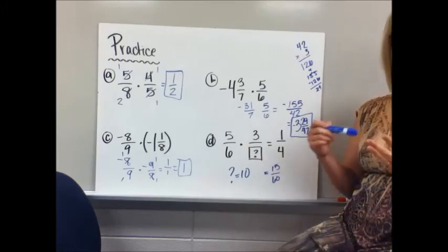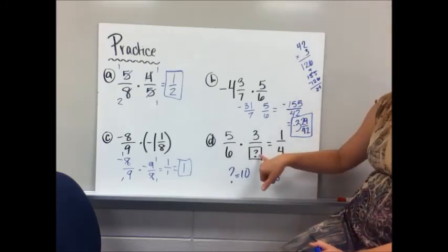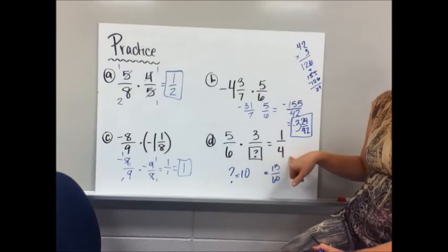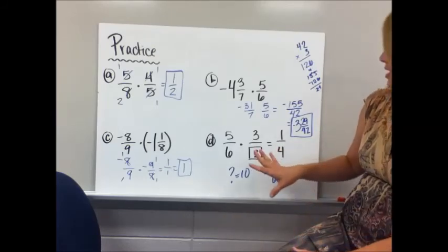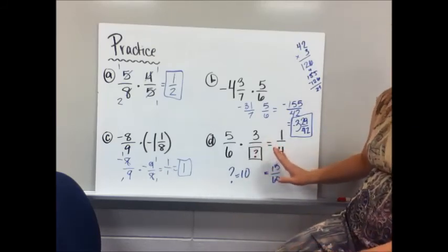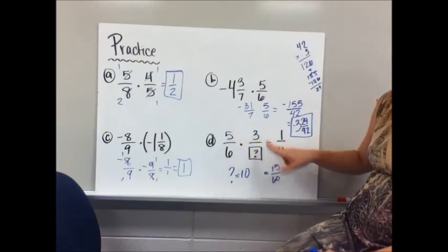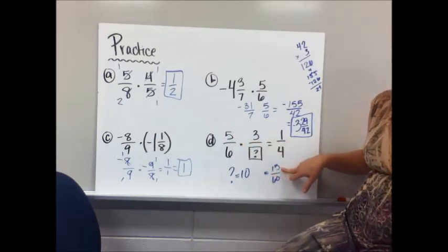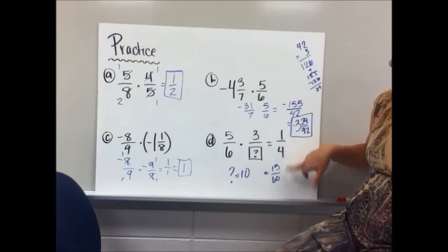Practice D, you kind of had to think a little bit more for this. I want to know what would be the denominator to get 1 fourth. The strategy that I use is, obviously, 1 over 4 is the simplified part. 5 times 3 would have been 15, and so I ask myself, 15 is a fourth of what? 15 over 60 is what it would reduce down to 1 fourth.